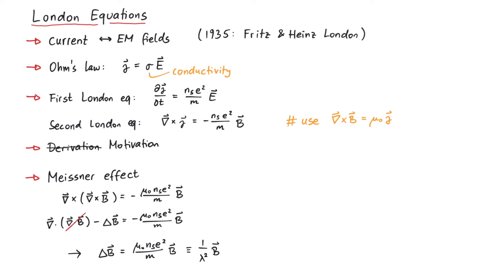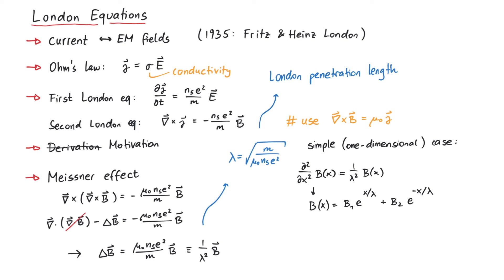This proportionality factor is written as 1 over lambda squared, where lambda has dimensions of length. And indeed, if we assume a simple case and write down the solution to this equation, we see that lambda appears as some sort of characteristic length, called the London penetration length. This tells us that the magnetic field is exponentially suppressed inside a superconductor, which is the Meissner effect. By the way, typical values for lambda are somewhere between 50 and 500 nanometers.